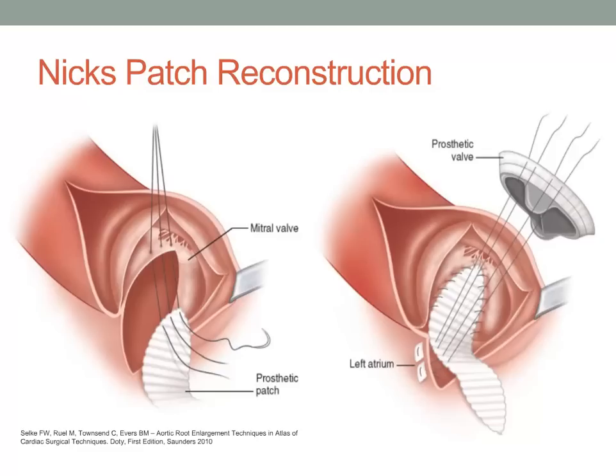Interrupted sutures without pledgets are suggested for accuracy and strength. At the level of the aortic annulus, interrupted sutures with pledgets are placed and passed first through the patch and then through the sewing ring of the prosthesis. The remainder of the valve sutures are subsequently placed through the annulus and sewing ring in standard fashion. If the left atrial wall is flexible and the defect is small, the left atrial wall can be approximated directly to the patch. Otherwise, a second patch is fashioned to reconstruct the left atrial defect.